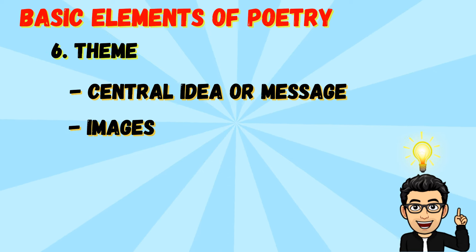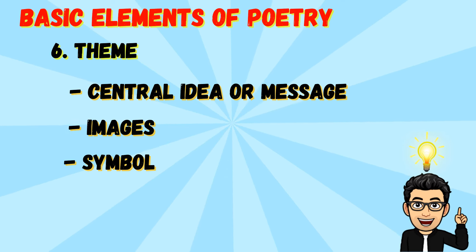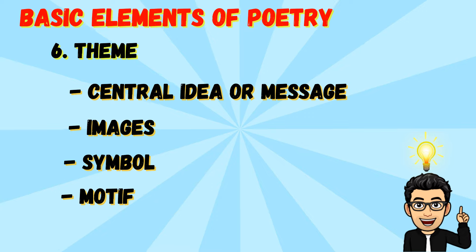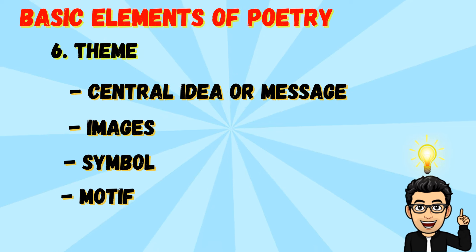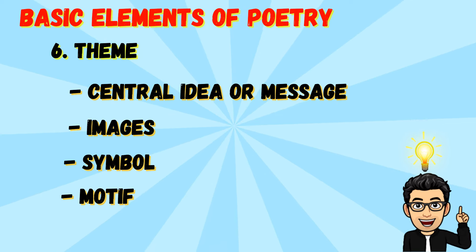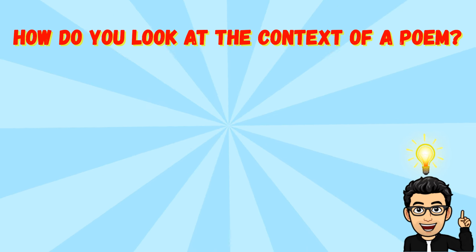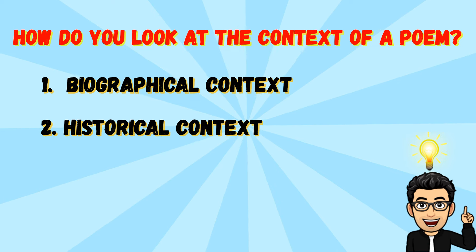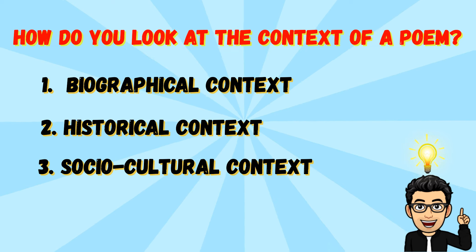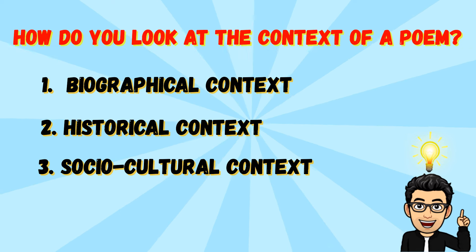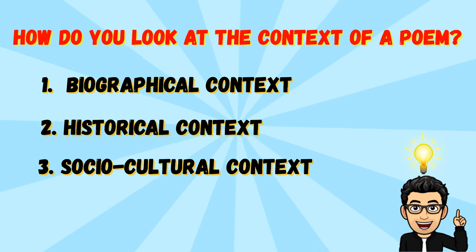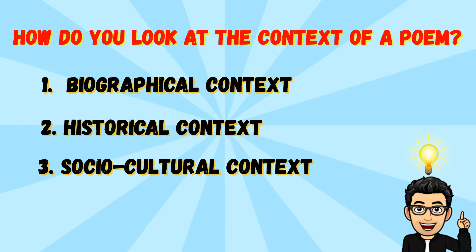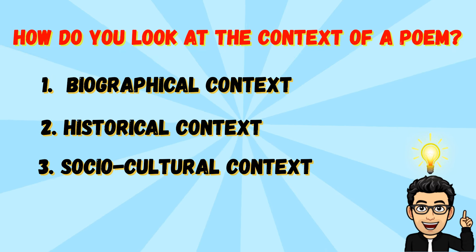The last basic element is theme. Theme is the central idea, message, or underlying meaning of a poem, often expressed through recurring images, symbols, or motifs. In addition to these elements, poems often have biographical, historical, and socio-cultural contexts, because these contexts greatly influence the themes, styles, and messages of the poems.